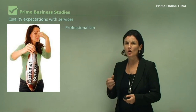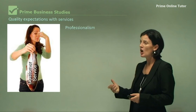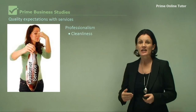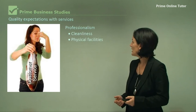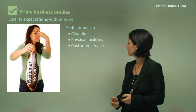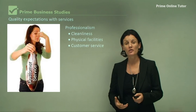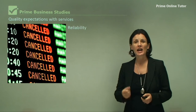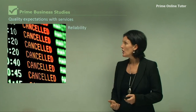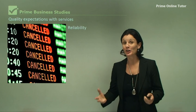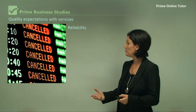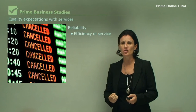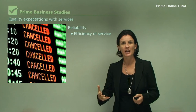With services, we also have quality expectations. Firstly, we expect professionalism. If I go into a lawyer's office, I'm expecting it to be clean, that the physical facilities are professional, and that they will give me the customer service I demand and deserve. I'm also going to expect that it's reliable. More and more consumers don't have a lot of time, so for example, if we book an air flight, we expect it to be efficient — if the airplane is due to leave at 10 o'clock, that airplane should leave at 10 o'clock.